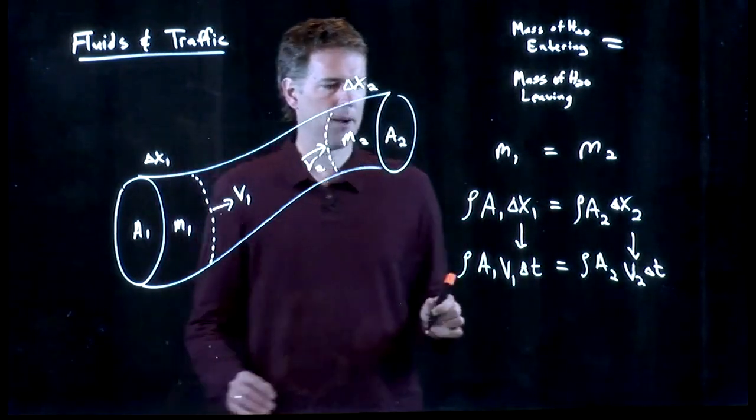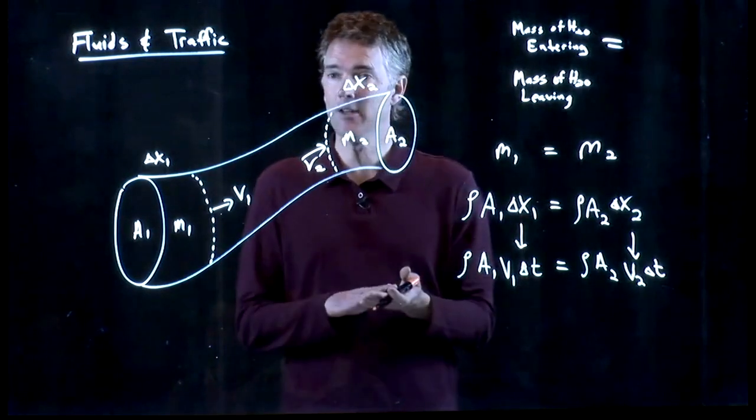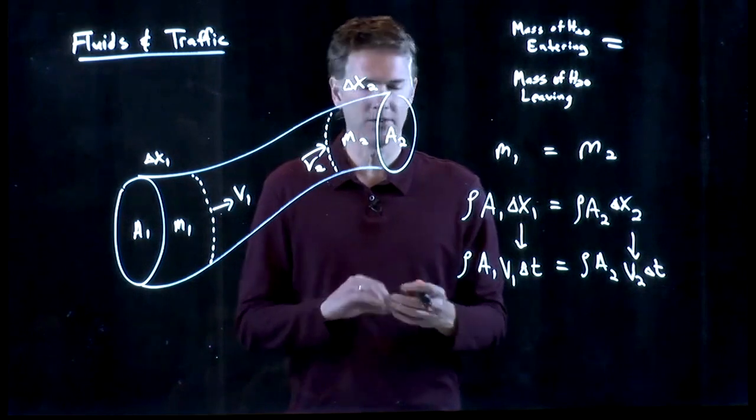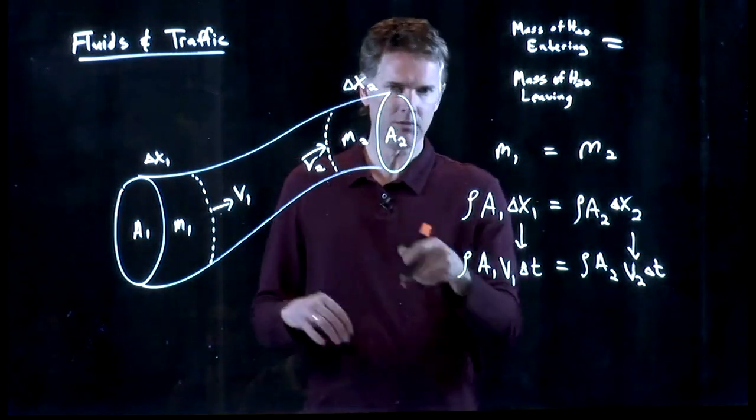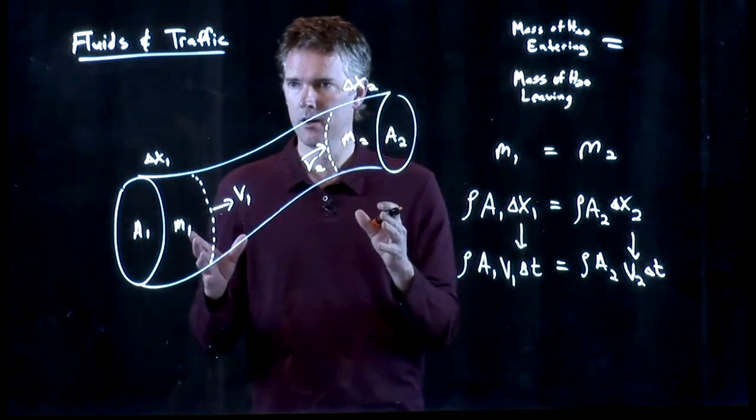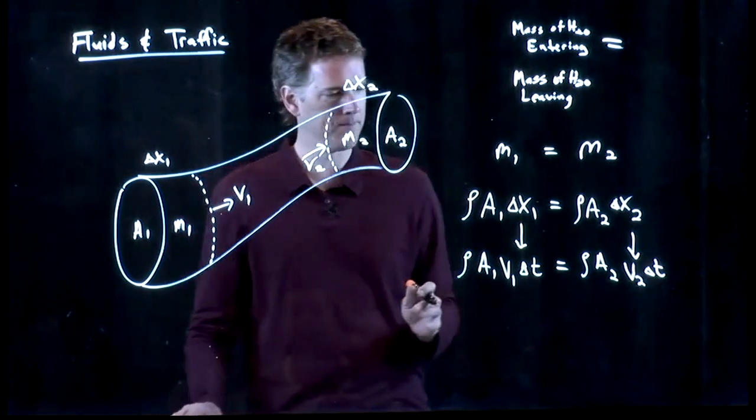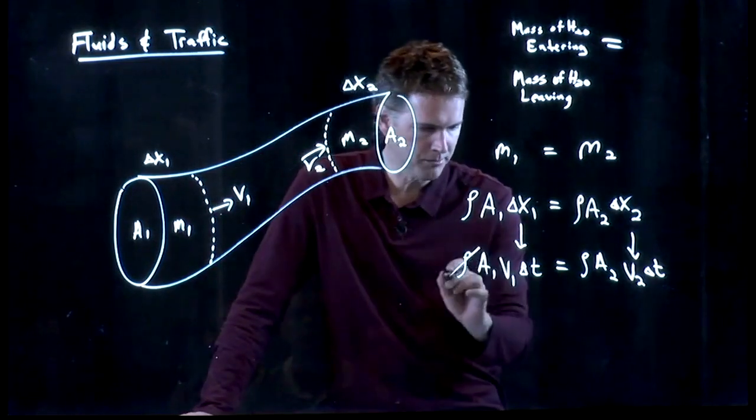And now look what happens. The density of the water doesn't change. Ideal fluid, we said, is incompressible, meaning the density doesn't change. This is a very good assumption for water. Water has basically the same density, no matter if you're pushing on it or not. And so rho drops out.